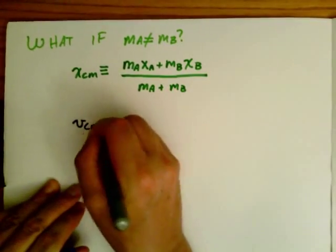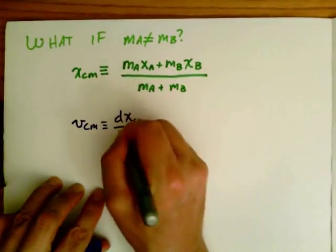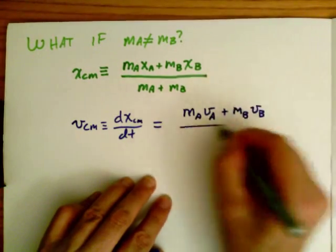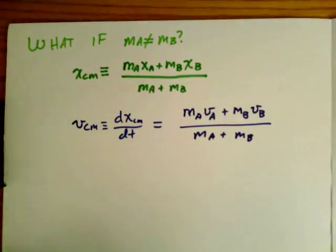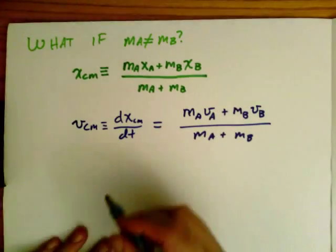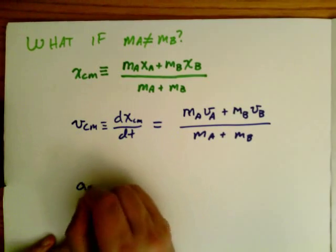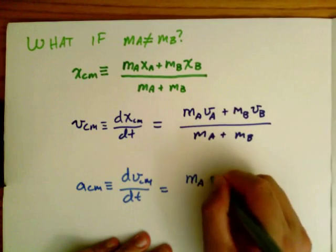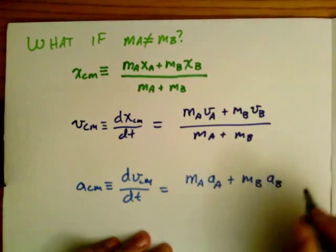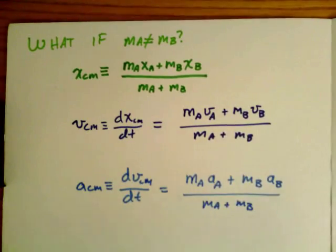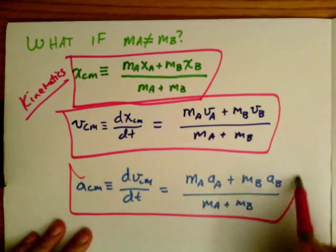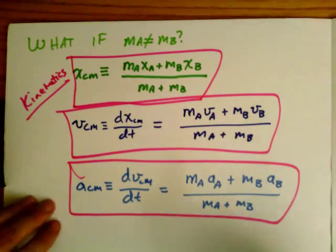I can likewise calculate the velocity by taking the time derivative. So I get again weighted velocities: mA vA plus mB vB over mA plus mB. And likewise the acceleration is just the time derivative of the velocity, which again is just the weighted average acceleration. These are all kinematic quantities describing the velocity and the acceleration and the position.